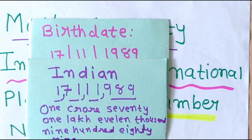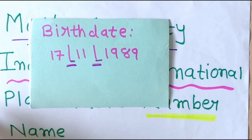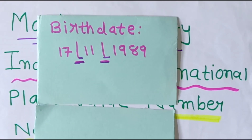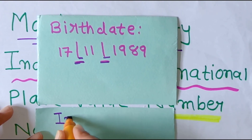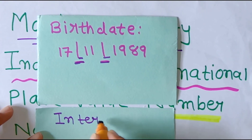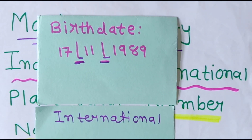We have done the Indian system of numeration. Now we will do it as per the international number system. We keep this aside, take another card, and write this number again.